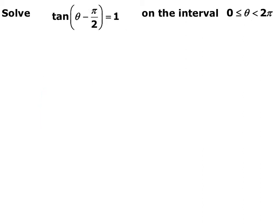Here we have the tangent of (theta minus pi/2) equal to 1. Before solving, find your new interval by looking at what's been done to theta inside the trig function and doing the same to your interval. We have theta minus pi/2, so instead of looking for theta, we look for theta minus pi/2 — meaning we subtract pi/2 from each part of our interval.